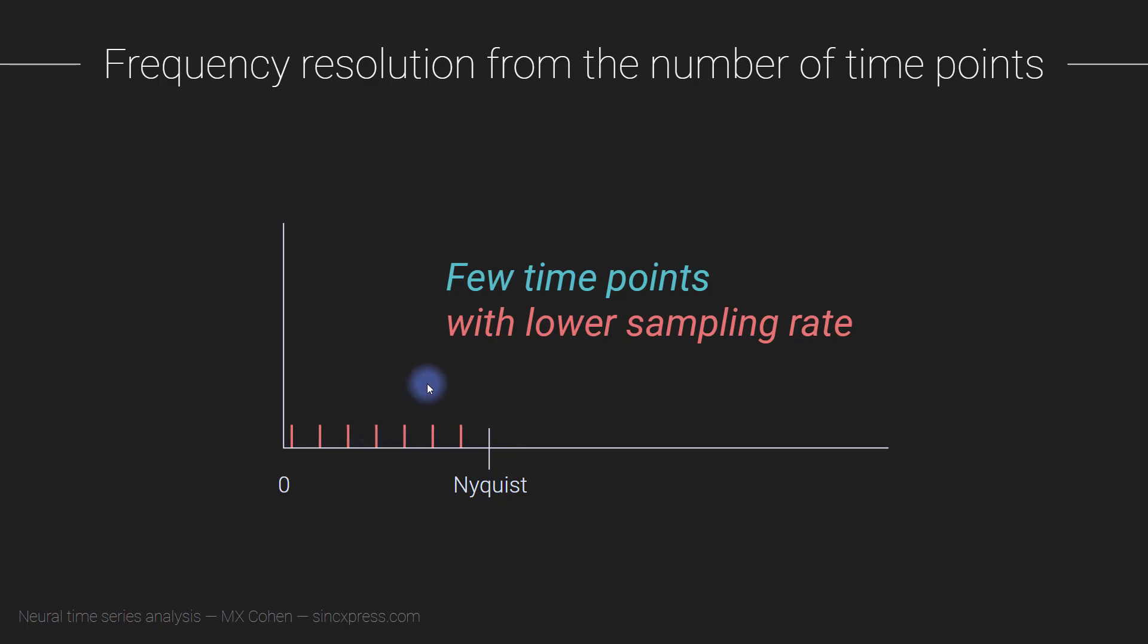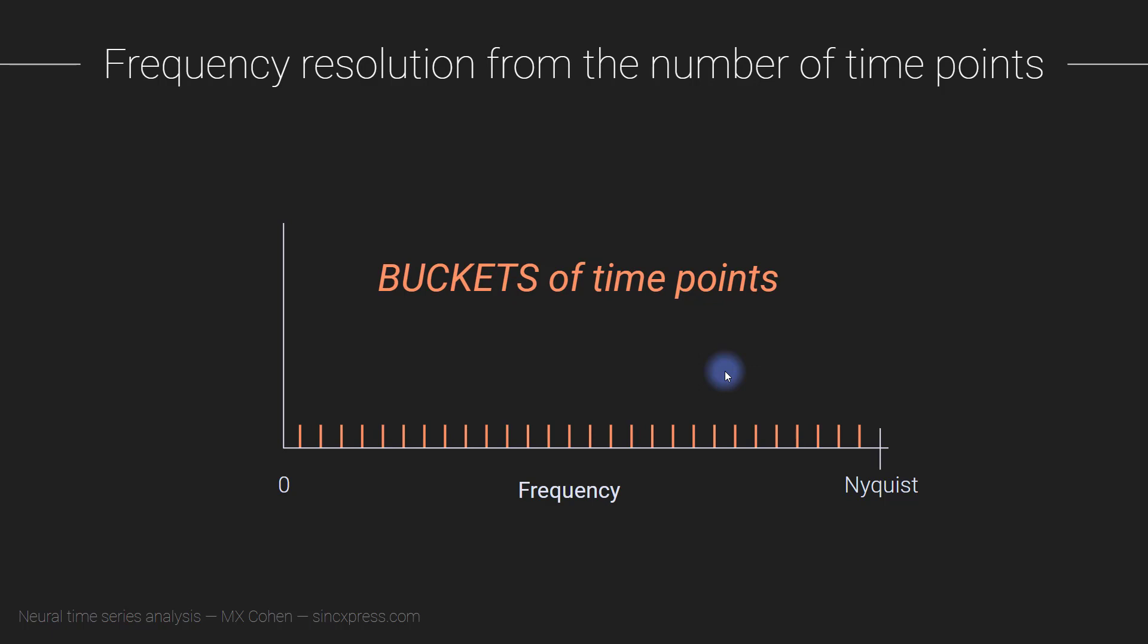This is also true that frequency resolution is determined by the sampling rate. However, in real practical data analysis, once you record the data, you don't often change the sampling rate. You do different analyses and typically keep the sampling rate the same.